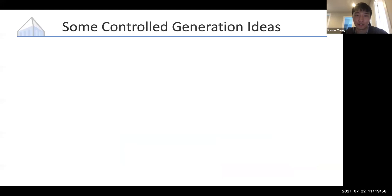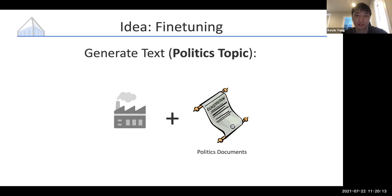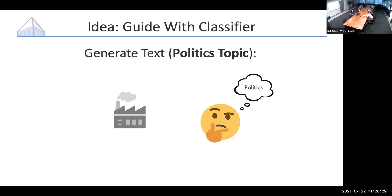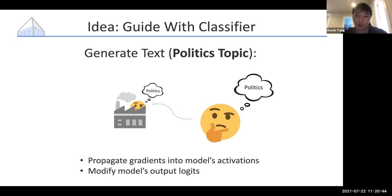So how does controlled generation work? I'll give an oversimplified summary of some ideas in this line of work just to put FUDGE in context. First, you can fine-tune — using the politics topic as a running example — and just train on a bunch of text about politics. Depending on how good your data is, this might work great or be pretty bad. It might also be annoying to have to fine-tune again if you want to write about science instead. Another idea is to use a classifier, since we're using a classifier to evaluate. There are different ways to do this: you can modify the model's activations by propagating gradients, or you could directly modify the model's output probabilities. One advantage of the latter is that you don't have to access the original language model's gradients — which is nice if you're using something like GPT-3. You can also swap out the generator easily as better models become available. FUDGE falls into this category where we just modify the output logits.